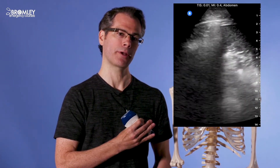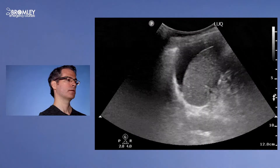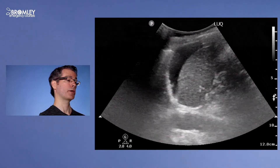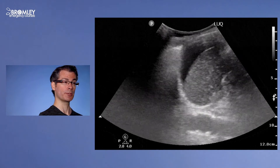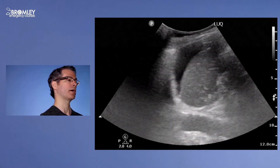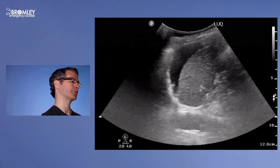Here's a video of a normal left upper quadrant. We have the spleen at the top of the screen and the kidney at the bottom, and now we're fanning through from anterior to posterior. Now we're going to slide up towards the thorax to look for any hemothorax, and then slide down to look at the inferior pole of the kidney — scanning through the whole region. Here's an example of a patient who has free fluid. You can see the black or anechoic area between the spleen and the diaphragm.